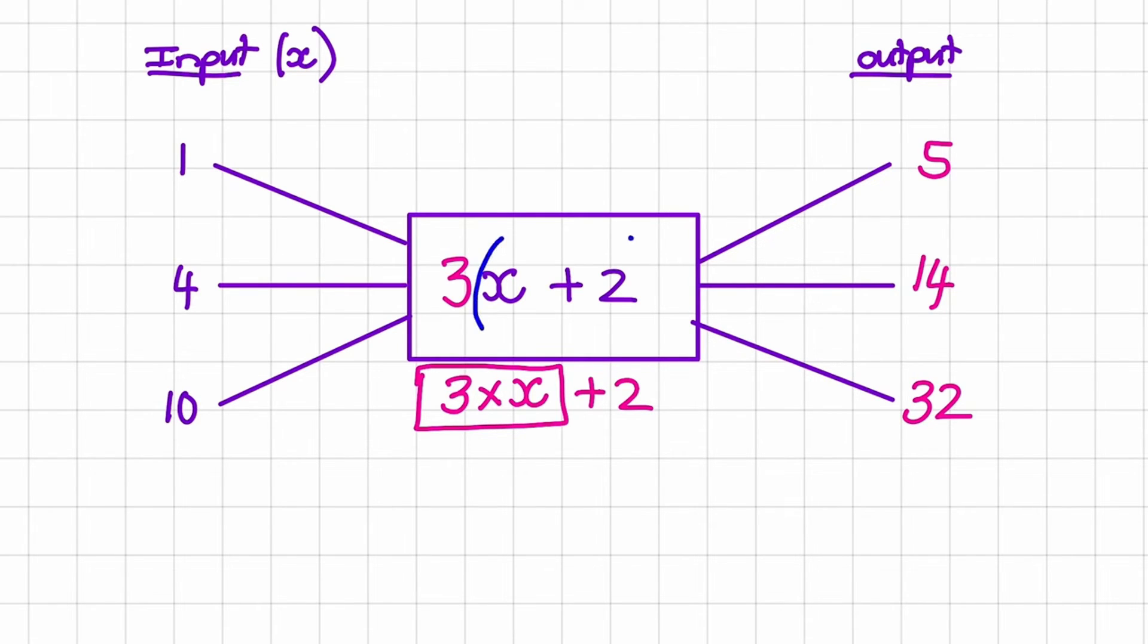So I add brackets around the x and the 2. Now the calculation would change slightly. This would become, so let's take away the output values, this would become 3 multiplied with the answer of x plus 2.